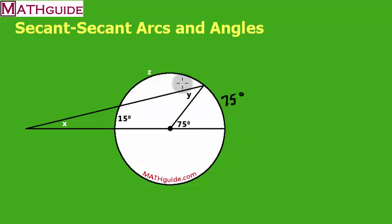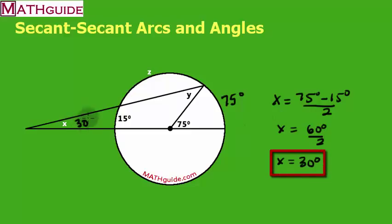I'd like to figure out what X, Y, and Z are, so let's first find X. Now that I have this arc and I have this arc, the two arcs that are inside this angle X, I'm going to take that 75 and 15, and I'm going to subtract them. So X is going to be equal to 75 minus 15 degrees, all divided by 2.